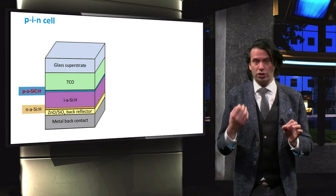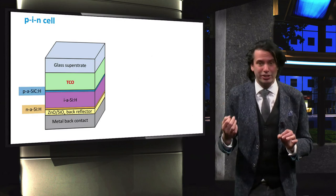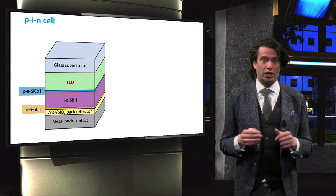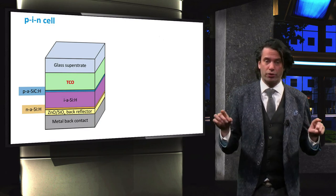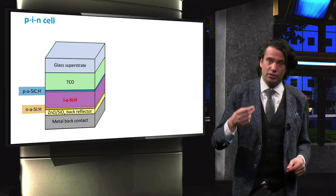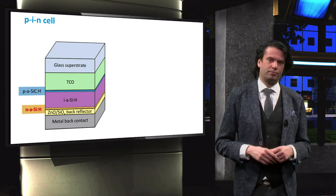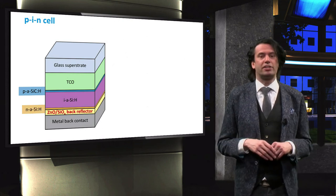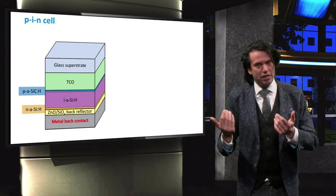Between the p-layer and glass substrate, a TCO layer is deposited to facilitate lateral charge carrier movement to the electrodes. The p-layer is followed by the intrinsic absorber layer and the thin n-doped layer. Finally, a thin zinc oxide or silicon oxide backreflector is deposited, followed by the metal back contact.